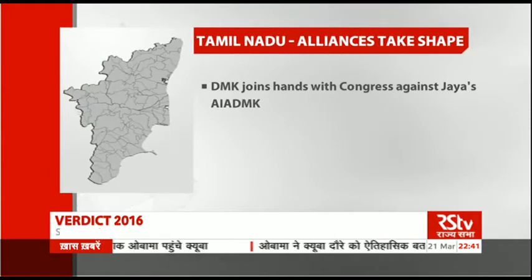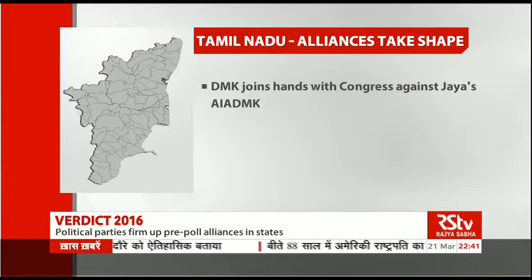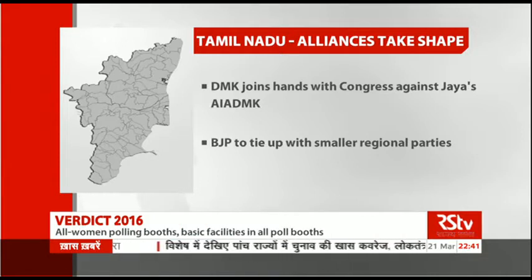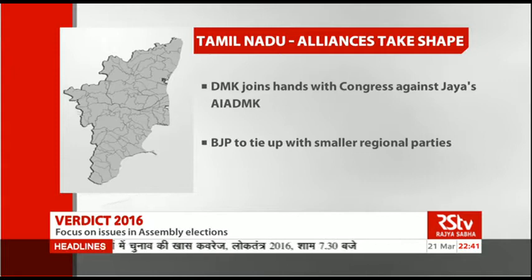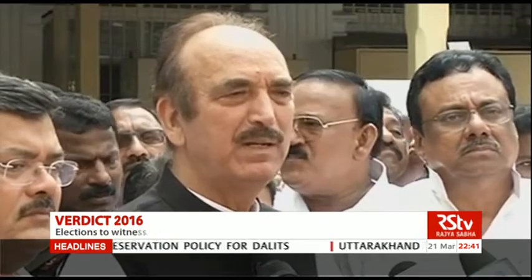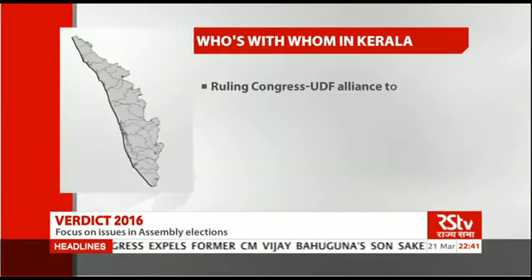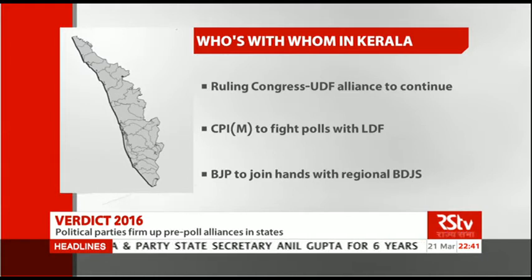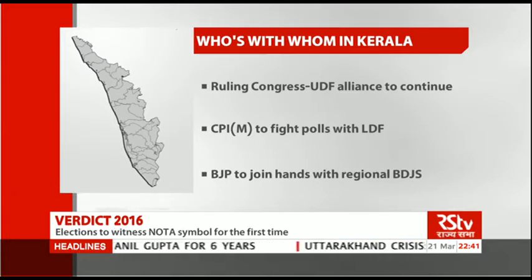In Tamil Nadu, the DMK and Congress will join hands once again to take on Jayalalitha's ruling AIADMK. They've agreed to set aside their differences for now. Watchers say the BJP too hopes to make its presence felt in the state and is likely to tie up with some smaller parties. In Kerala, the UDF will fight the election behind the Congress, and the CPM will lead the LDF alliance. The BJP has tied up with the regional player, Bharatiya Dharma Jana Sena.